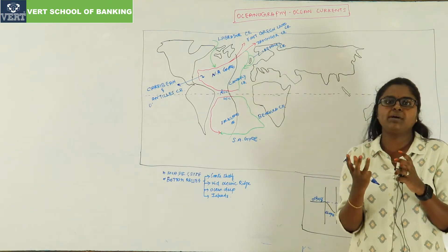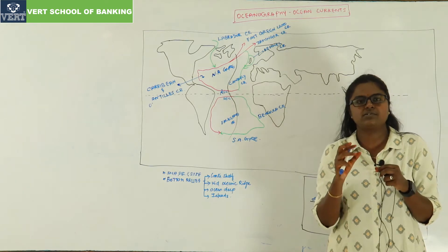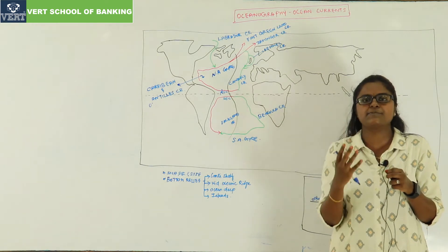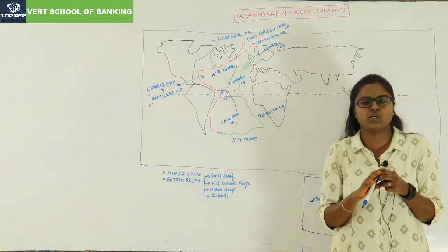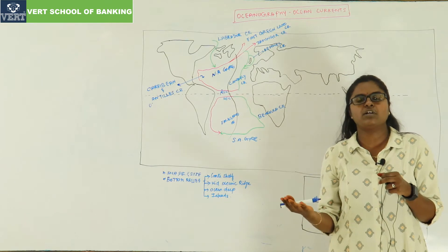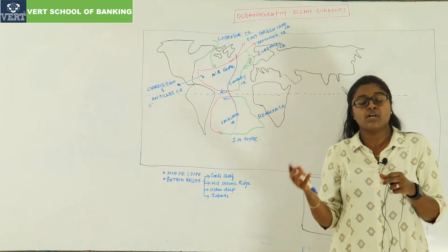At a global level, only about 2% to 3% of water is consumed as fresh water. The other parts of water remain as ocean.